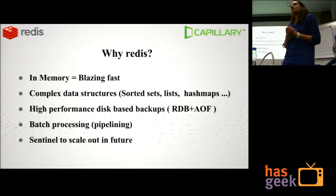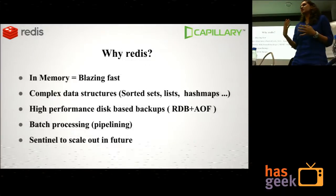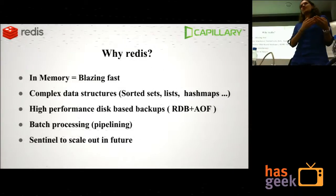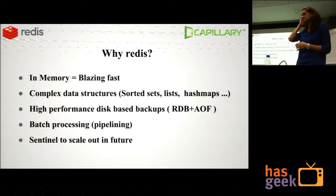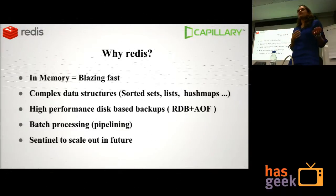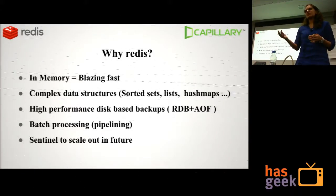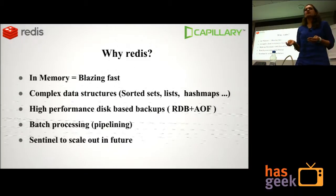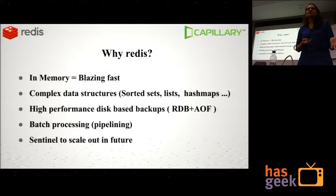Another advantage is batch processing — Redis provides pipelining, so you can get results for a set of commands at once. This eliminates the network latency involved when doing it one by one, making processing really fast. Additionally, when your database is growing you can have a cluster of Redis servers and a master-slave configuration where if a master goes down you can promote your slave.